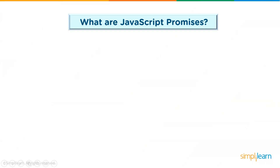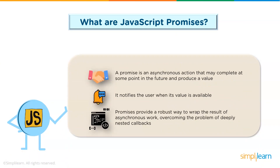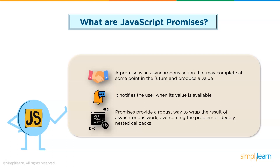Moving on — what are JavaScript promises? In the case of asynchronous actions, instead of arranging for a function to be called at some point in the future, you can return an object that represents this future event. This is what the standard class Promise is for. A promise is an asynchronous action that may complete at some point in the future and produce a value. It is able to notify when its value is available. The easiest way to create a promise is by calling the Promise.resolve() method, which ensures the value you give it is wrapped within a promise.